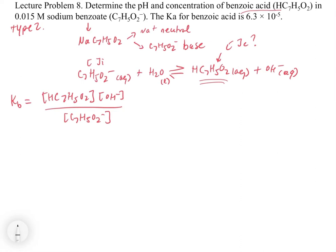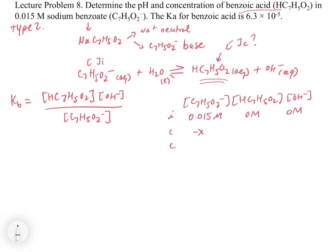Now we go into our ICE table. We're starting with 0.015 molar C7H5O2-, and 0 molar for HC7H5O2 and hydroxide. Some of the base is going to go away, minus x, and an equivalent of benzoic acid and hydroxide are going to come in, plus x each. You should be starting to see a pattern - once you get to the ICE table, these problems work themselves out pretty quickly.